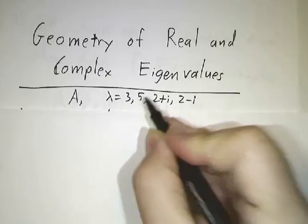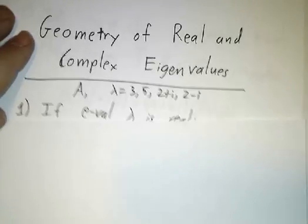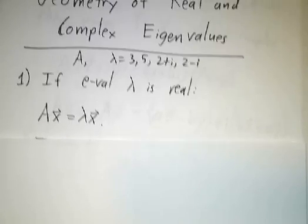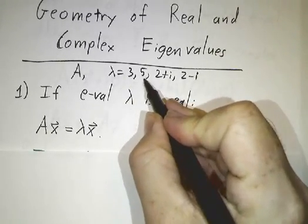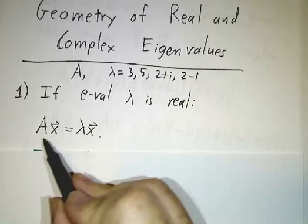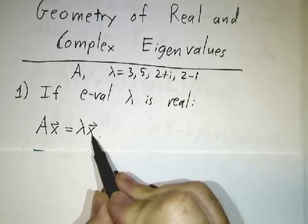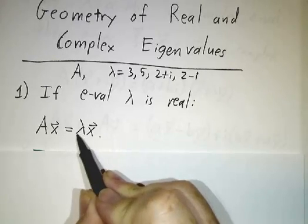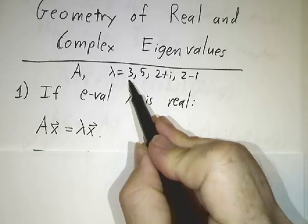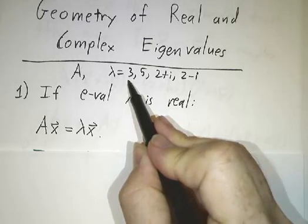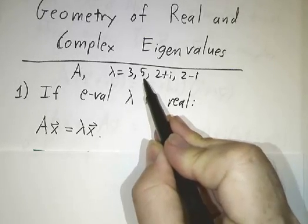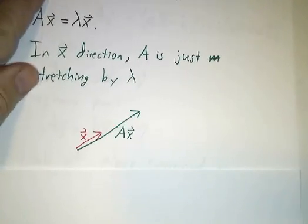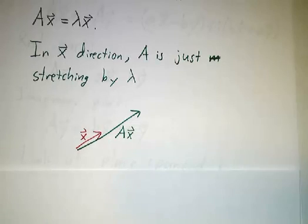Well, from the real eigenvalues, you can immediately tell that there are certain special directions where all the matrix does is stretch by a factor of 3 or stretch by a factor of 5. After all, if Ax = λx, then for any vector in the x direction, it just multiplies it by a factor of λ. In the direction of this eigenvector, it stretches by 3. In the direction of this eigenvector, it stretches by 5. And that's all it's doing—stretching in a particular direction.